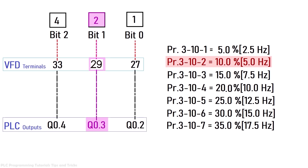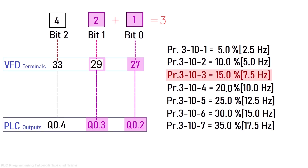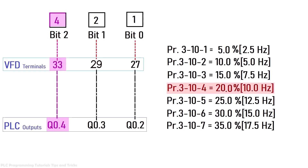If we turn on Q0.2 and Q0.3 together, it activates bit 0 and bit 1. The sum of these bits is 3, so it loads preset frequency reference 3 — 7.5 Hz — and the motor will run at 7.5 Hz. If we turn on Q0.4 it activates bit 2 (value 4), loading preset frequency reference 4 — 10 Hz.